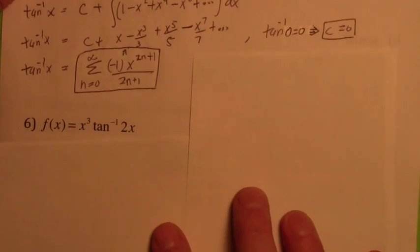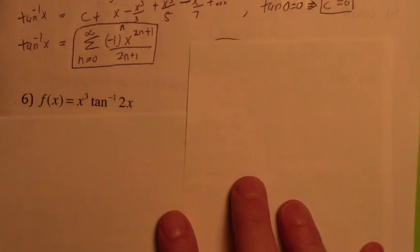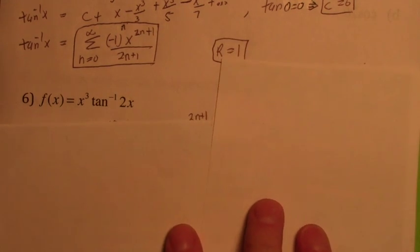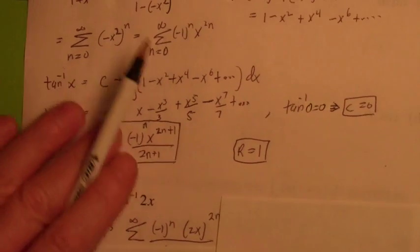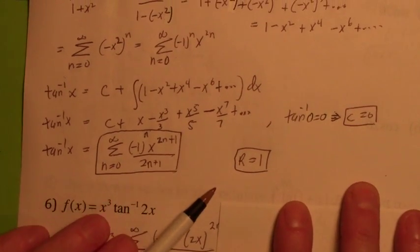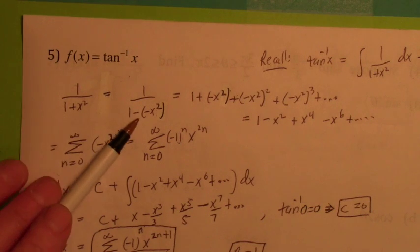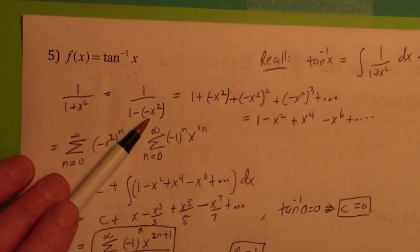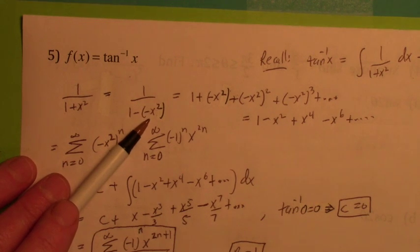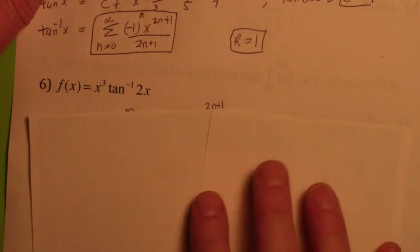The radius of convergence doesn't change. It's the same radius of convergence from the geometric power series where x squared has to be between negative 1 and 1, so r would still be 1. Everything in the homework in this section relies on that geometric power series.